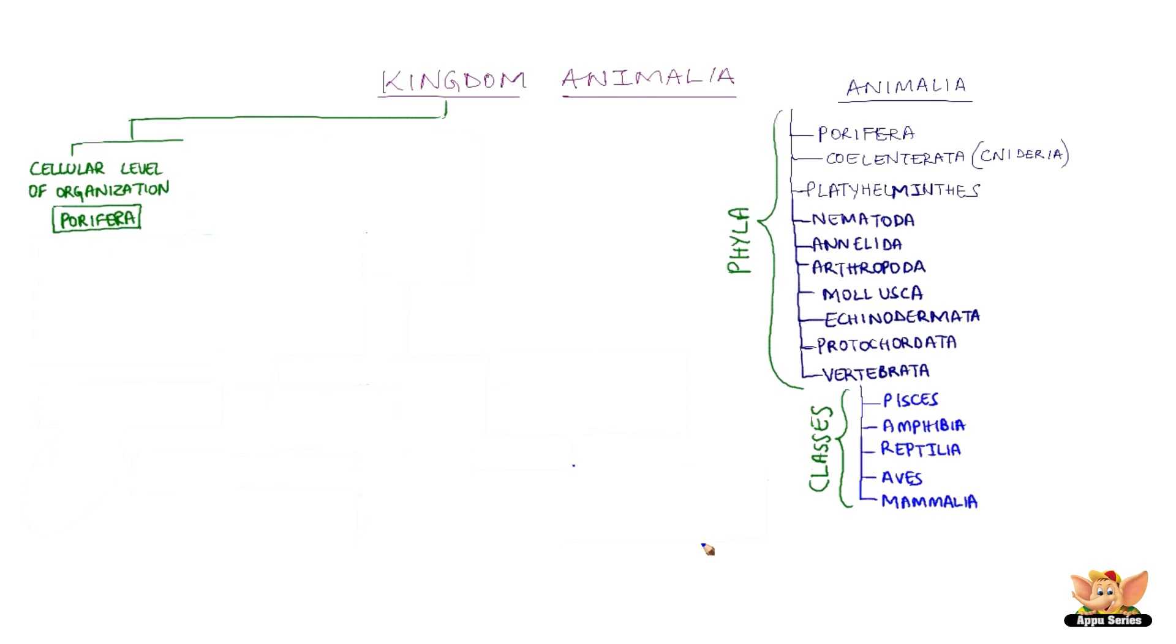Porifera means organisms with holes. They have pores all over their body. The body design involves very minimal differentiation and division into tissues. Sponges are examples of Porifera and are mainly found in marine habitats.